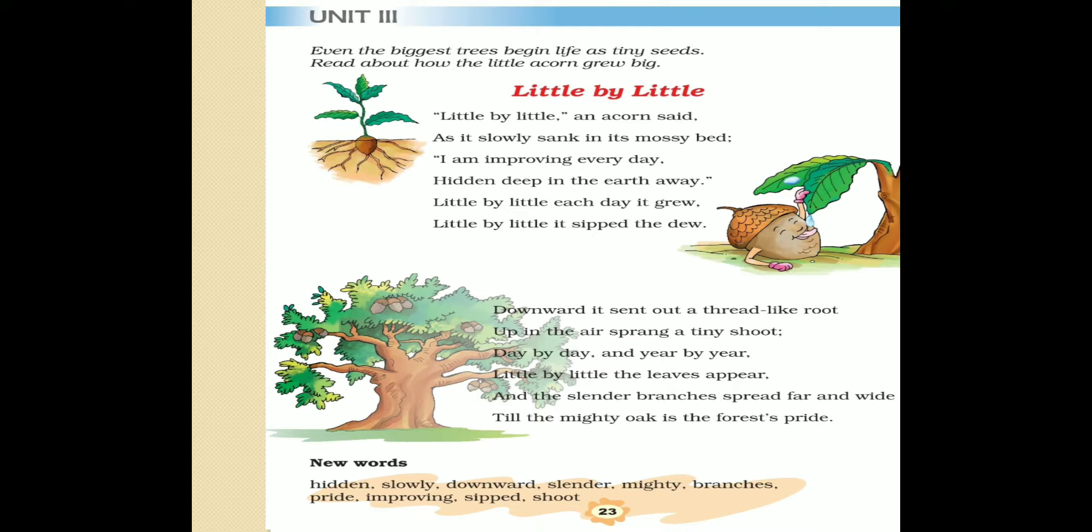Downward it sent out a thread-like root. Up in the air sprang a tiny shoot. Day by day and year by year Little by little, the leaves appear. And the slender branches spread far and wide Till the mighty oak is the forest's pride.